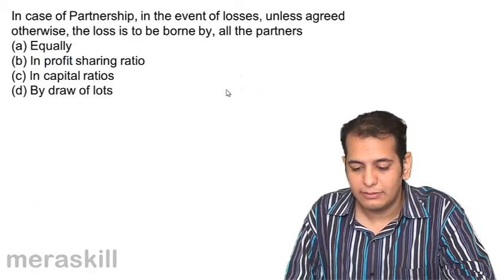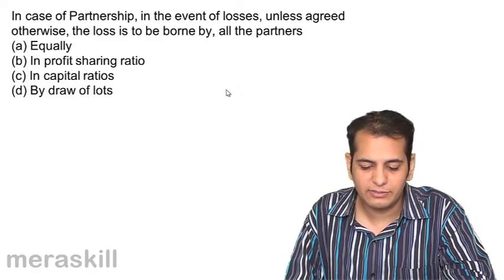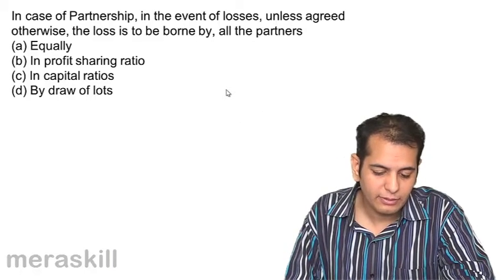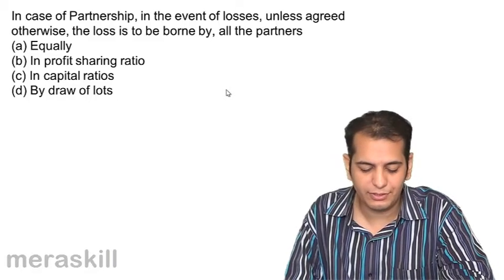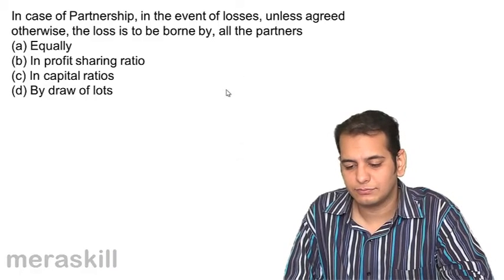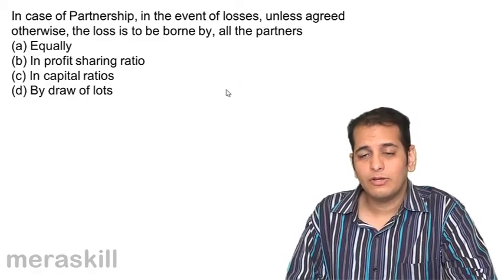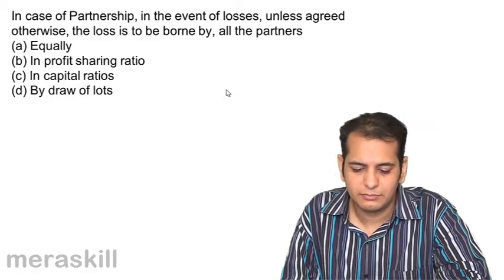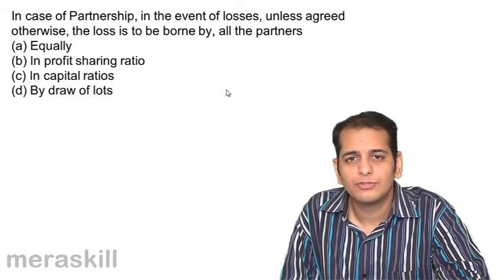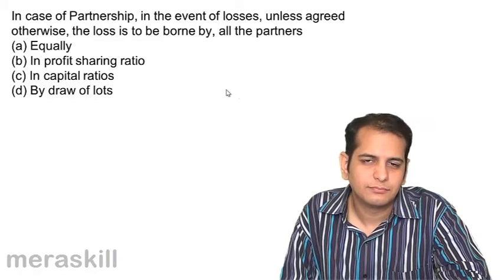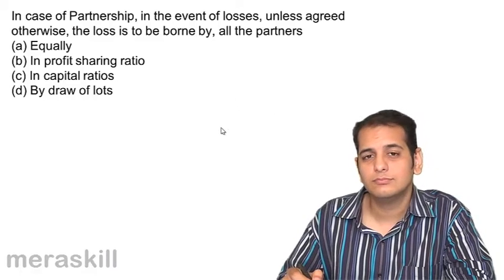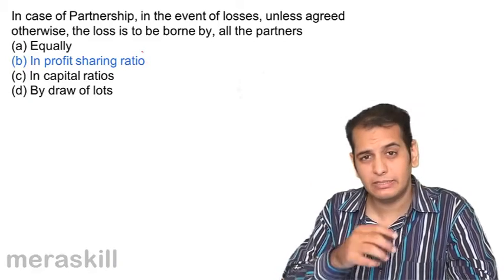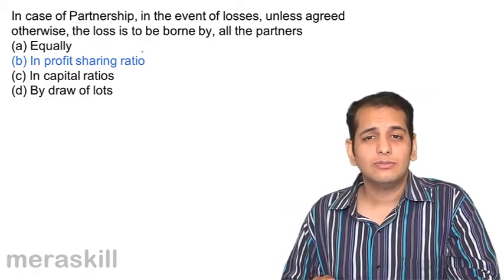In the event of losses, unless agreed otherwise, the loss is to be borne by all partners: a) equally, b) in profit sharing ratio, c) in capital ratios, d) by draw of lots. If there are losses and no ratio is determined, the losses should be borne in the profit sharing ratio (PSR). Most students incorrectly answer 'equally' — that is a common mistake.